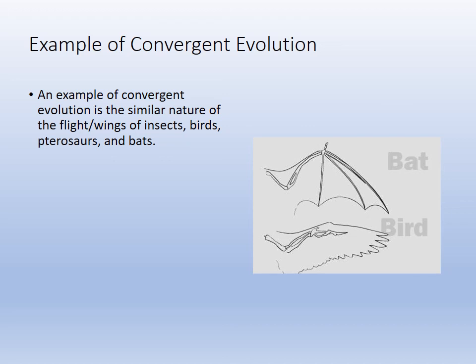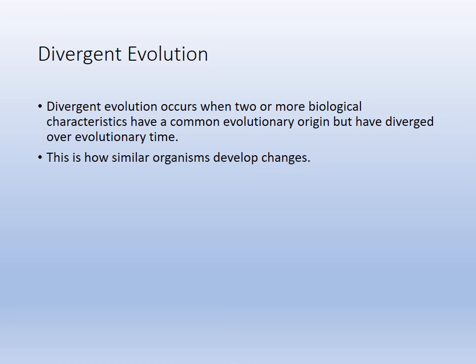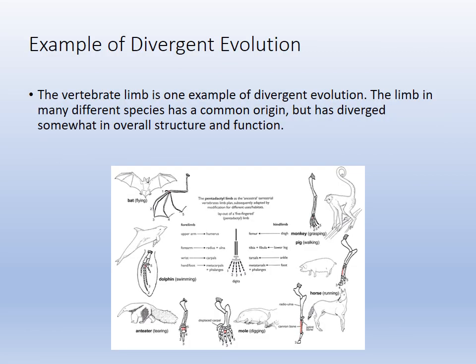Convergent evolution again — birds, bats, and insect wings are another example. Divergent evolution is when similar organisms become different; we mentioned those iguanas because of a different habitat. The limb — we all have a radius, ulna, and humerus — but because of our different habitats and different niches, they have evolved into different structures. So the vertebrate limb is an example of how species have diverged.